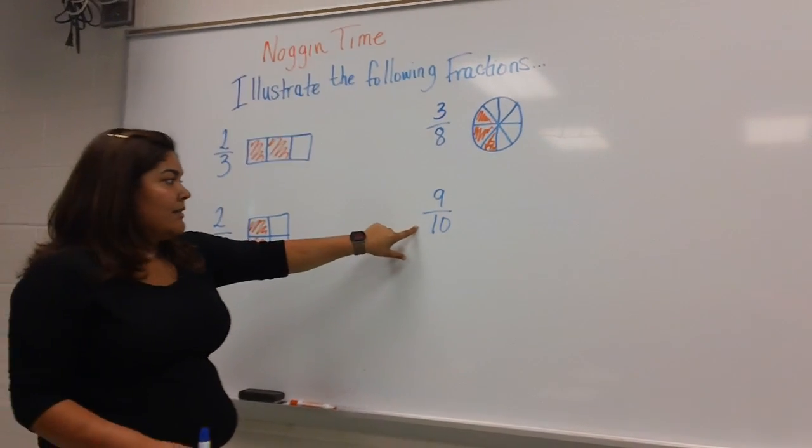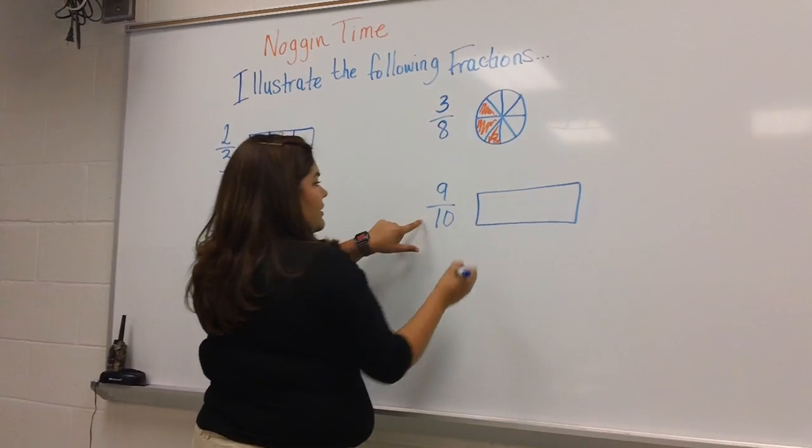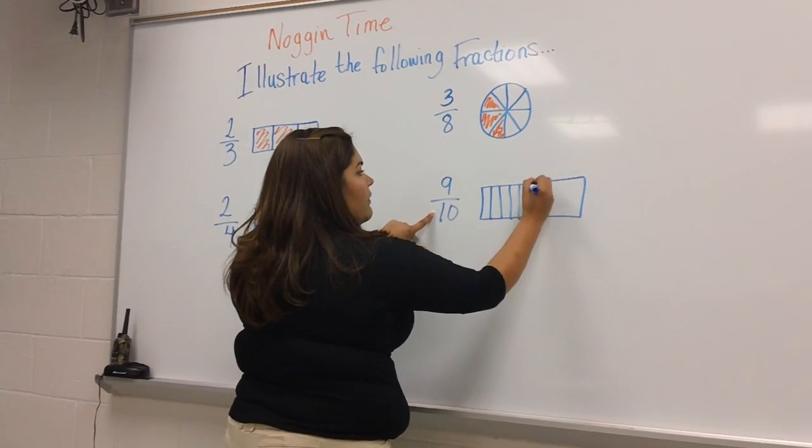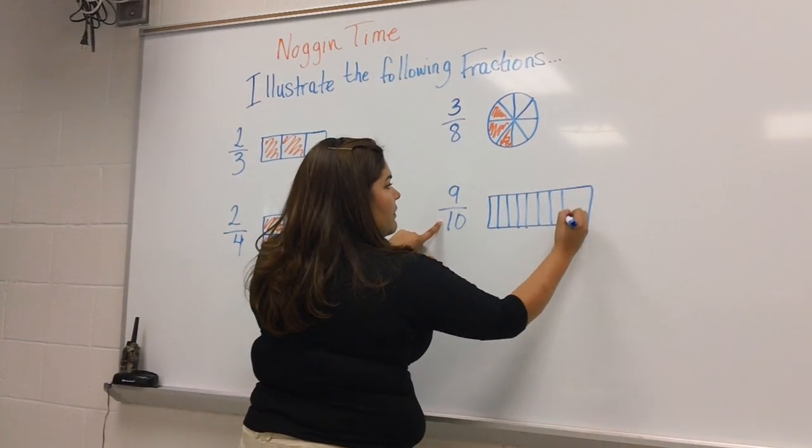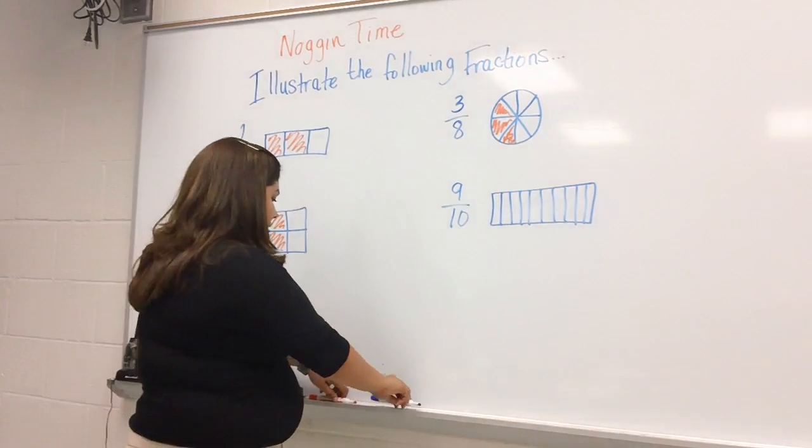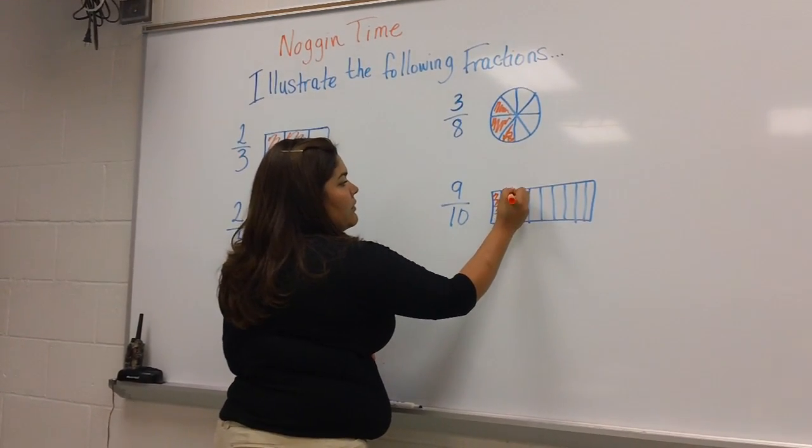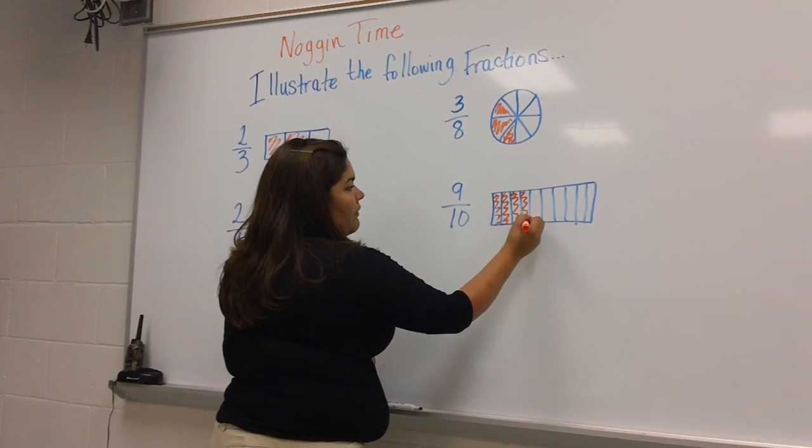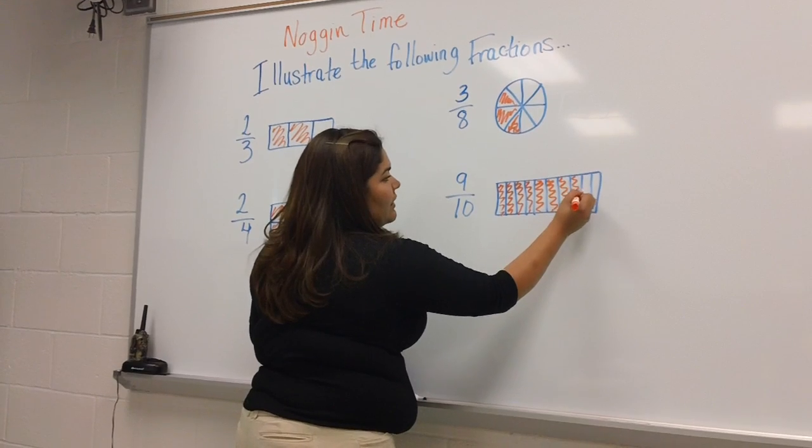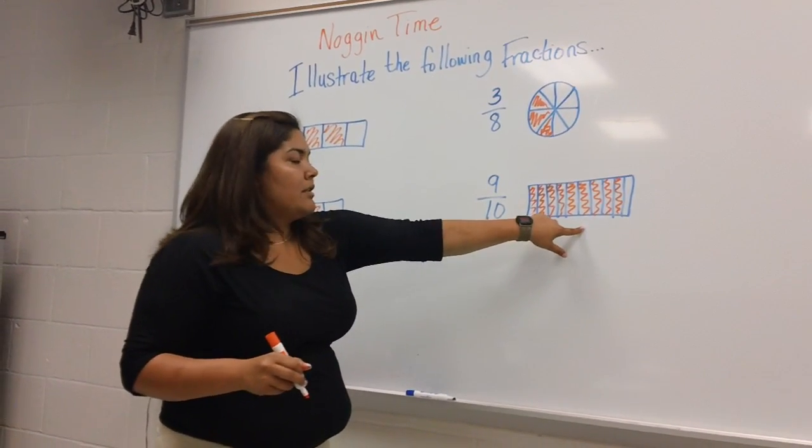Our last fraction here is nine-tenths, so we're going to take our whole and cut that into ten parts. We need nine of these parts to complete our fraction, so we're going to take one, two, three, four, five, six, seven, eight, nine. Nine out of the ten, nine-tenths.